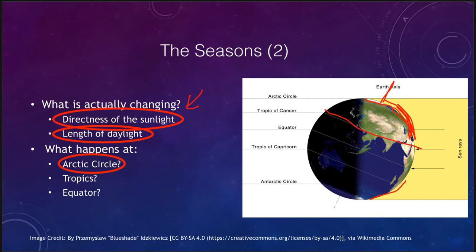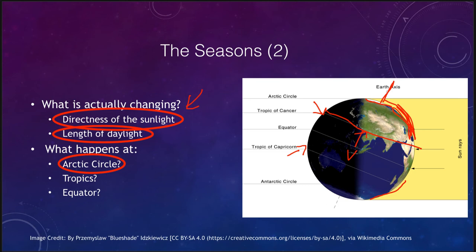The Tropic of Cancer in the northern hemisphere and the Tropic of Capricorn in the southern hemisphere mark the points at which the sun would be directly overhead one day a year. If you're further north than that, the sun would never be directly overhead. Between the tropics and the equator the sun is directly overhead twice a year. At the equator itself, the length of daylight doesn't change — the equator is always half in light and half in dark, so daylight is always 12 hours.